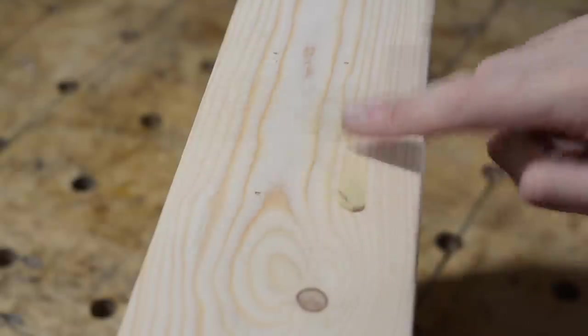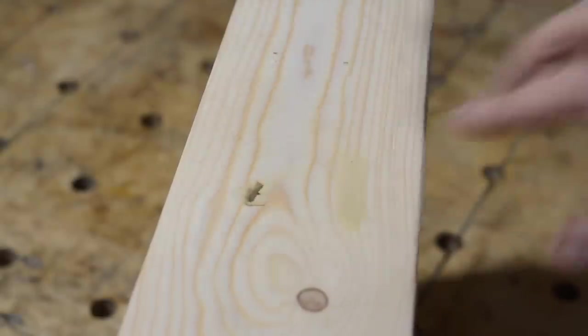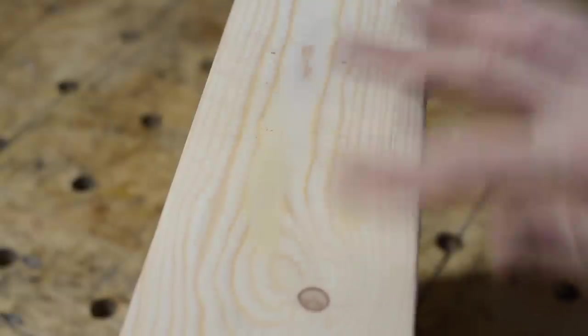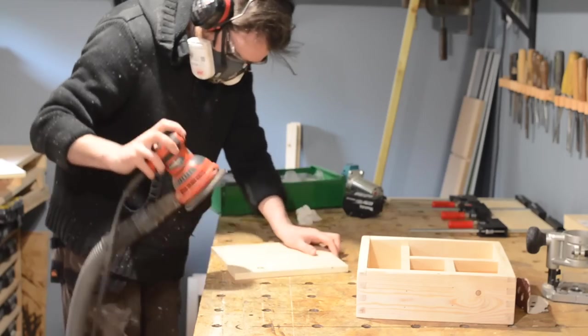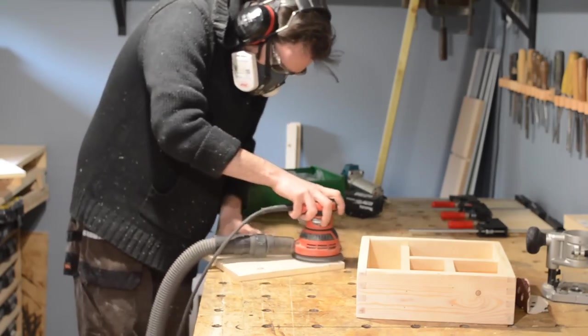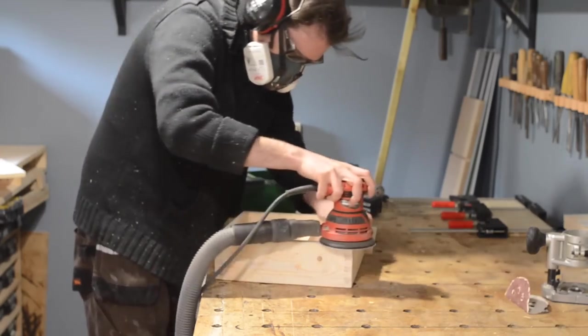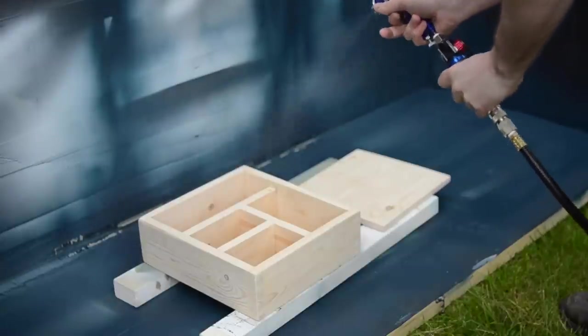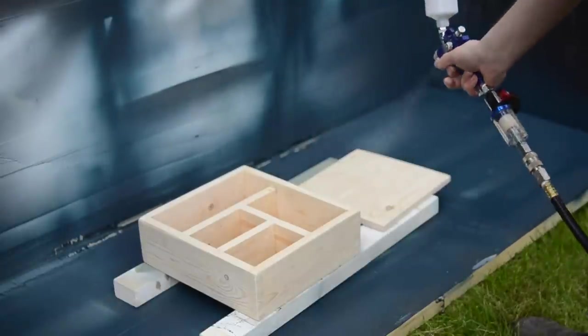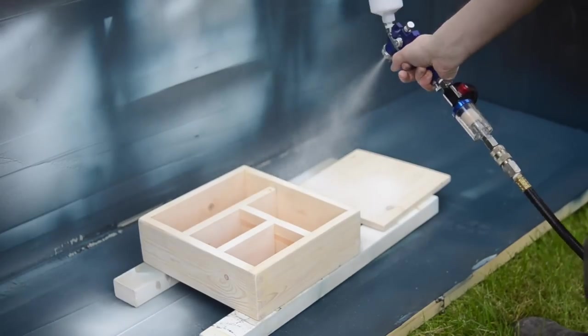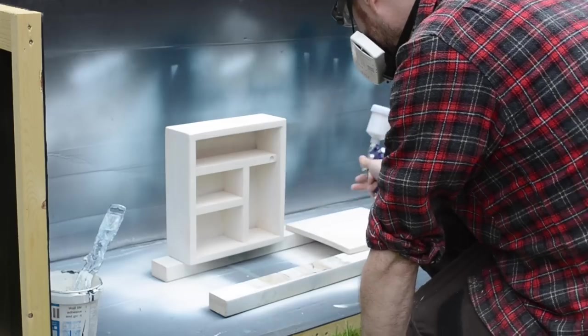With all the woodworking done I can get the holes filled and then sand everything down ready for painting. I set my spray booth up outside and then I can get it painted. Spraying certainly makes it a lot easier to get into these little tight spaces.